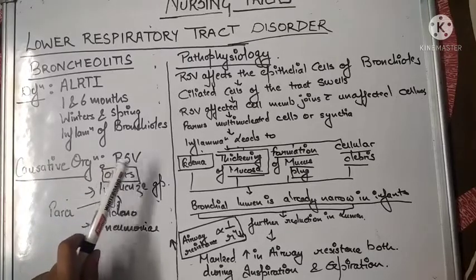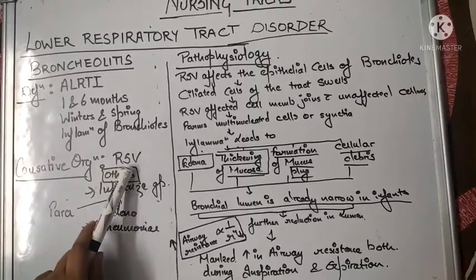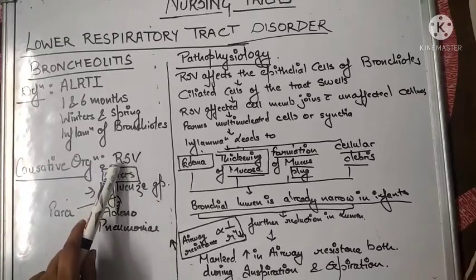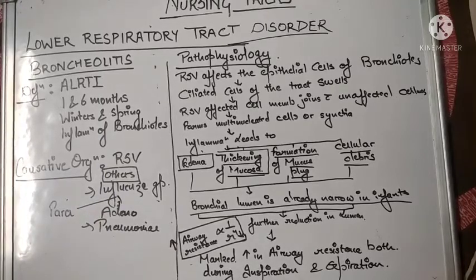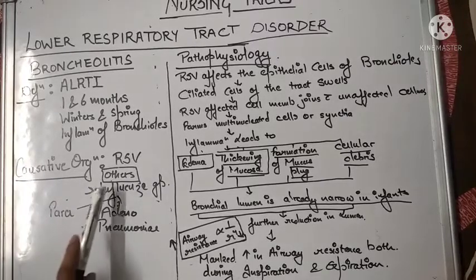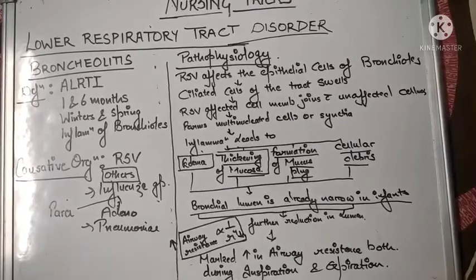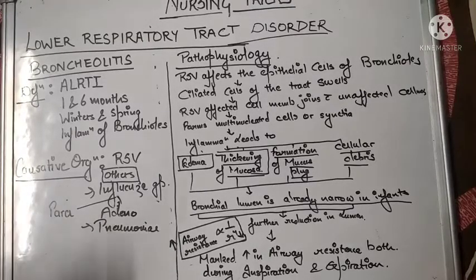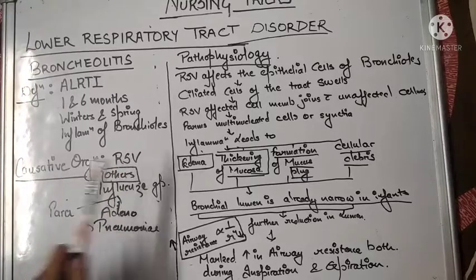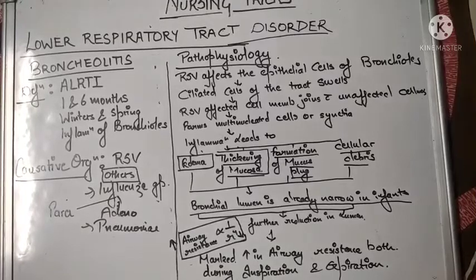The causative organism of bronchiolitis is the Respiratory Syncytial Virus (RSV). This disease is caused by a virus, and the most common causative organism is RSV. Other organisms that can lead to bronchiolitis include the influenza group — specifically parainfluenza virus and adenovirus — and from the pneumonia group, Mycobacterium pneumoniae can also lead to this condition.